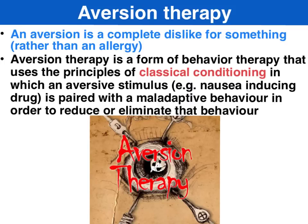An aversion is a complete dislike for something with a psychological cause. In terms of using aversion therapy as a behavioural modification technique, it uses the principles of classical conditioning by pairing an aversive stimulus — such as electric shocks or nausea-inducing drugs — with the maladaptive behaviour that's been targeted in order to reduce that maladaptive behaviour.